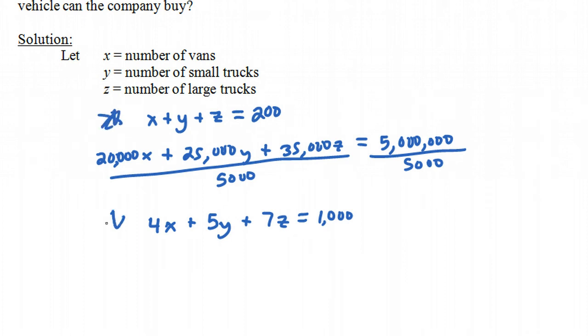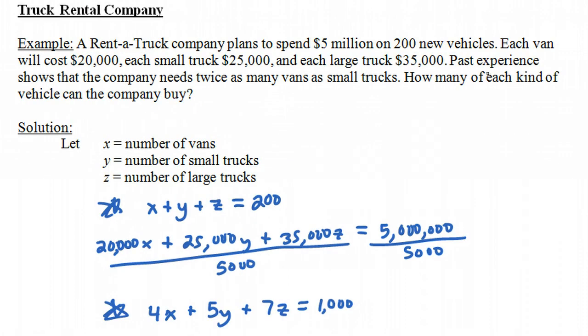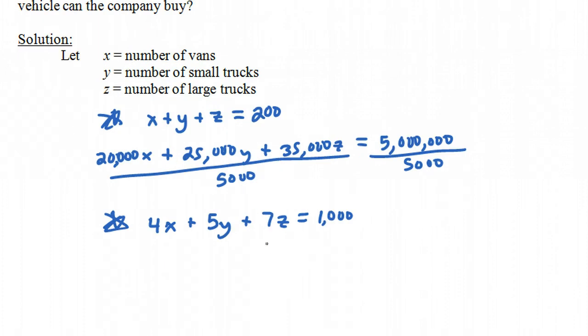What is our third equation? We're also told that past experience shows that the company needs twice as many vans as small trucks. So if y is the number of small trucks, if you double that, that should be the number of vans. So x should equal 2y. I like to write equations where all the x's and y's are in the same side of the equal sign. So let's rewrite this as x minus 2y is equal to 0.